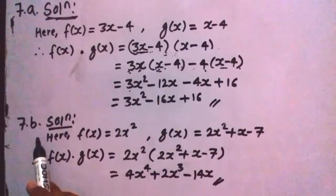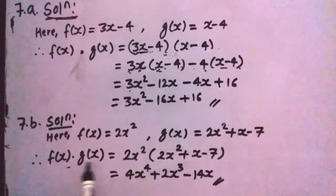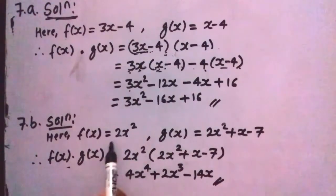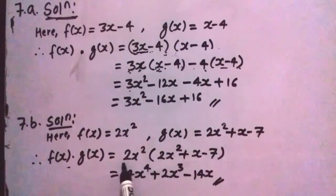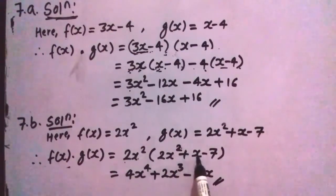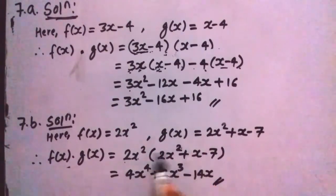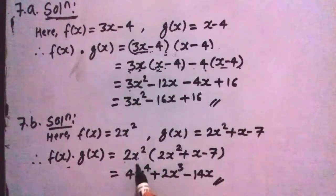Similarly in question number 7b, this f(x) polynomial and this g(x) polynomial are given. We have to find the product, so we multiply the two polynomials. We have 2x squared — this is f(x) times g(x). Then 2 times 2 is 4, and x squared times x squared is x to the power 4, since the powers 2 and 2 add to 4. Then x squared times x gives x to the power 3, since power 2 plus 1 is 3. And minus 2 times 7 is 14, and x squared.